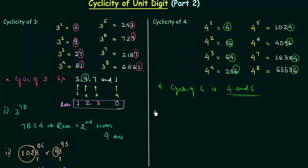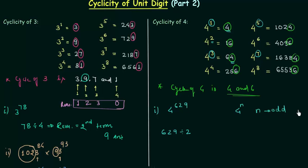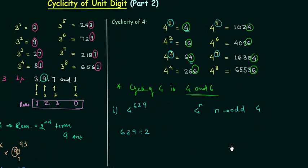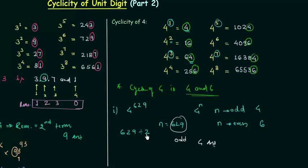Let's solve one example: 4 raised to power 629. You could divide 629 by 2 and check the remainder, but a simpler observation is: when the power is odd, the unit digit is 4, and when the power is even, the unit digit is 6. Here n is 629, which is odd, so the digit at the unit place is 4. So 4 is the answer.